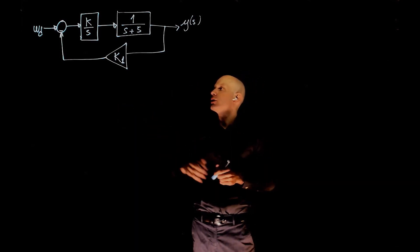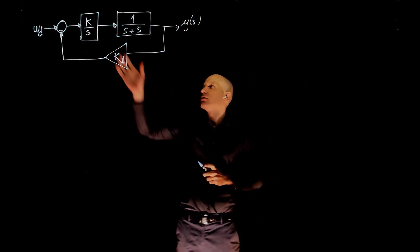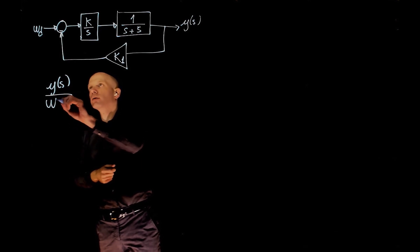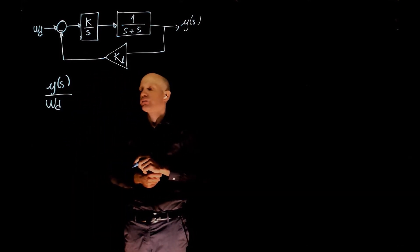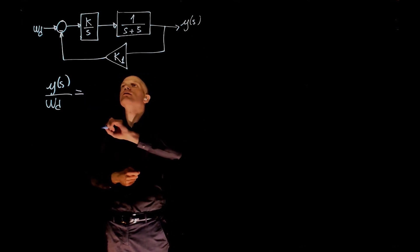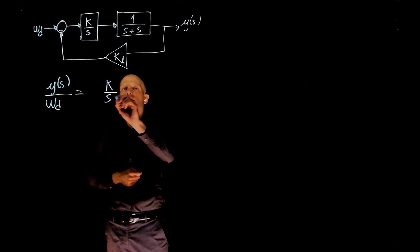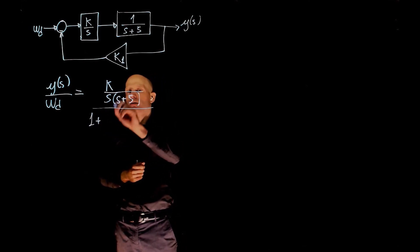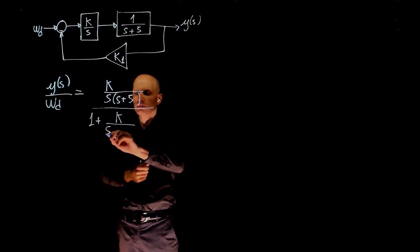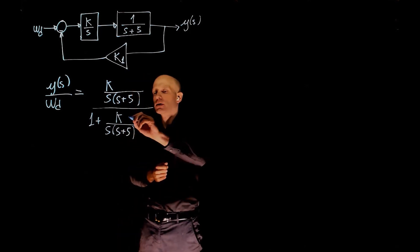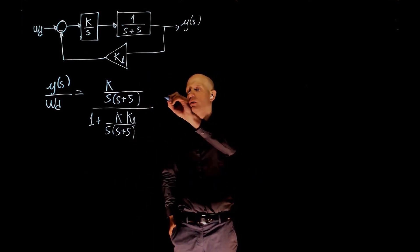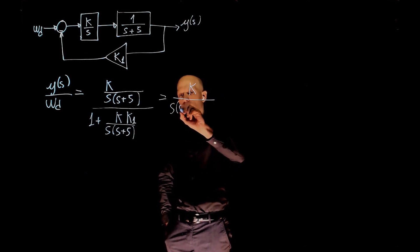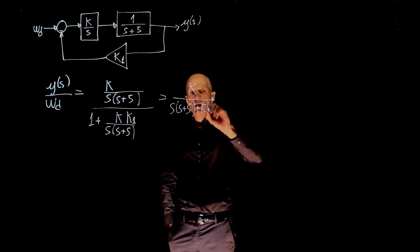To do that now, we need to find the transfer function. This is a simple transfer function to find. We have the line function and the feedback function here. So y of s over w of s is k over s times s plus 5, the multiplication of these two functions, divided by 1 plus the same function, and times k1, the feedback function. And this will simplify to k over s, s plus 5 plus k, k1.